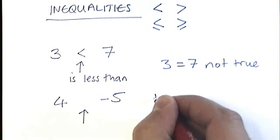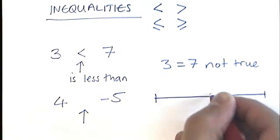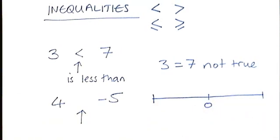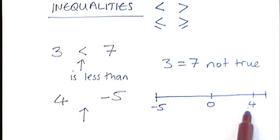One way to help you decide is to think about a number line. Where's 4 on the number line? Where's minus 5? So 4 is greater than minus 5.